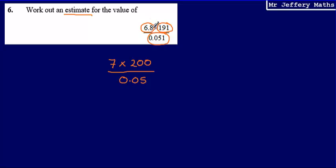So how can I represent 6.8 using only one digit? Well, the easiest way to represent 6.8 would be to call that 7. Using only one digit that's not a zero, how could I represent 191? That would be 200. So using only one digit, the 2, and then two zeros.